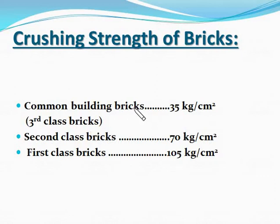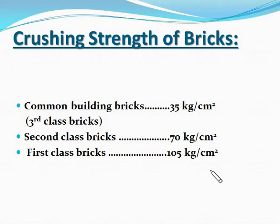The second class bricks have a compressive strength of 70 kg per cm square. The best quality bricks, which we call first class bricks, have a compressive strength of 105 kg per cm square.